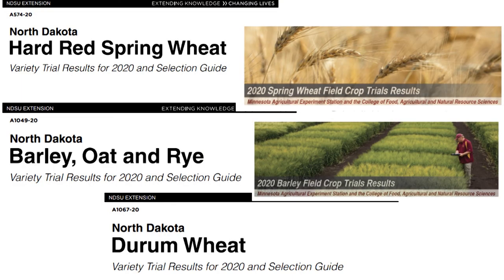When it comes to looking at variety resistance, there are some great resources out there through continual breeding efforts and evaluation efforts in the breeding programs at both North Dakota and Minnesota. You can find these easily accessible each year by typing in the crop of choice and looking for specific trial results and evaluations of the diseases that you find in each manual.